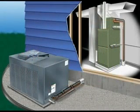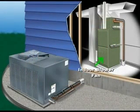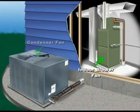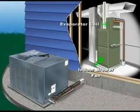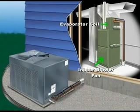Two items not previously mentioned are the indoor blower fan and the condenser fan. The indoor blower fan moves the indoor air past the evaporator coil in order to transfer the heat in the room air to the refrigerant in the evaporator coil.